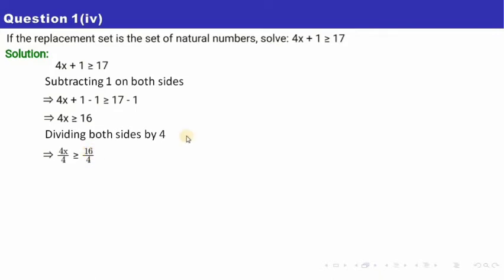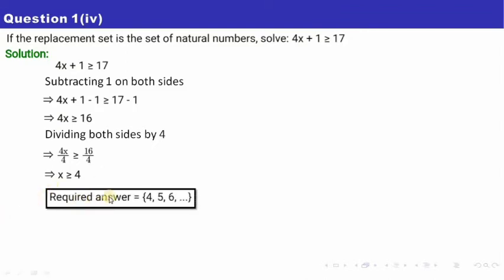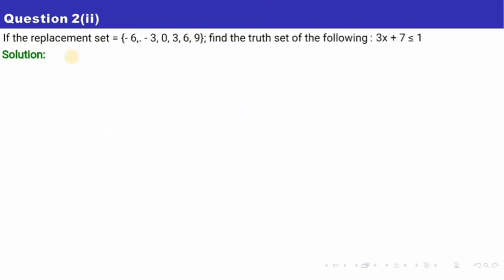After dividing by 4, the 4s cancel leaving only x, and 16 divided by 4 is 4. So x is greater than or equal to 4, meaning the minimum value of x is 4 and it can be greater. The natural numbers greater than or equal to 4 are 4, 5, 6, and so on. The solution set is {4, 5, 6, ...}. You may pause the video to note that down.